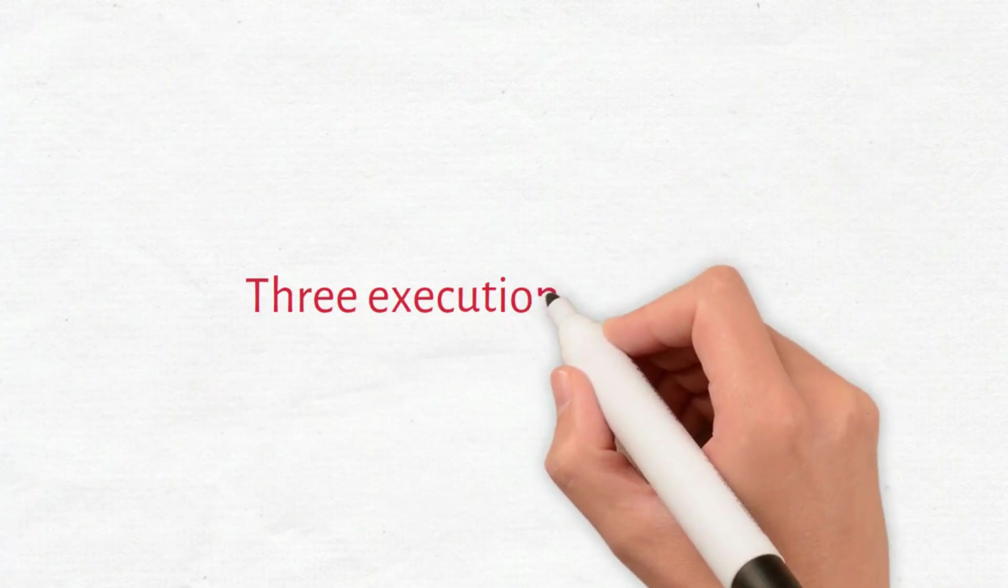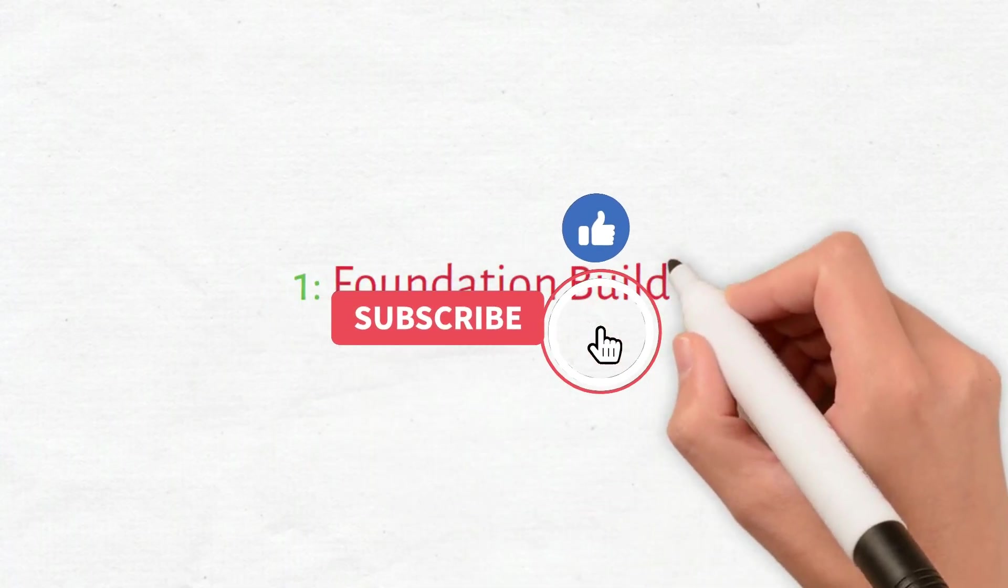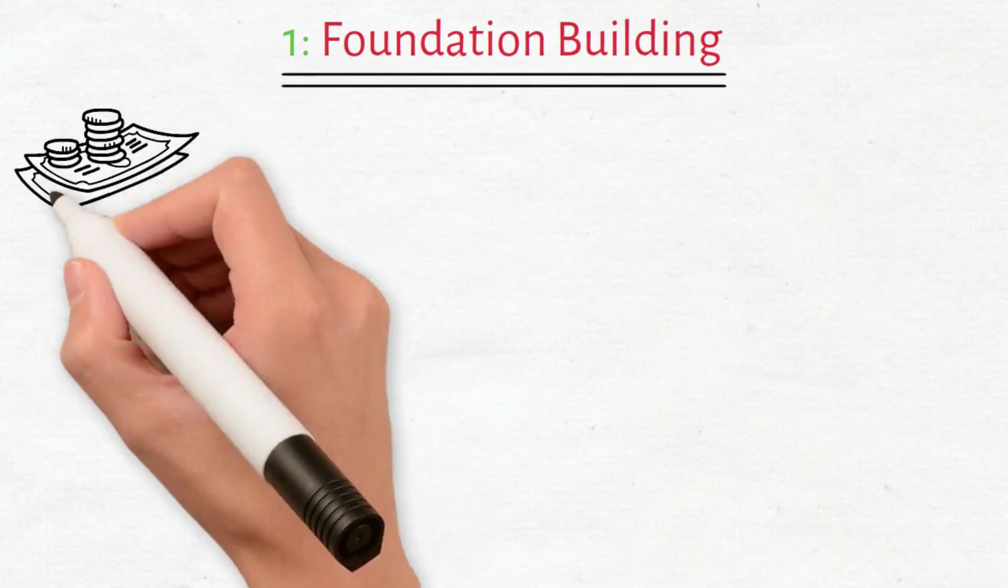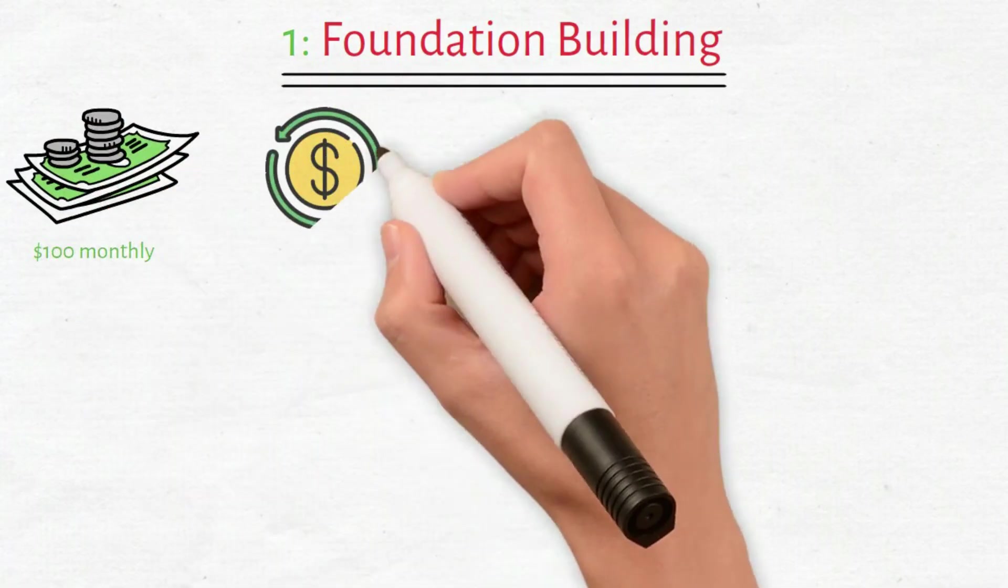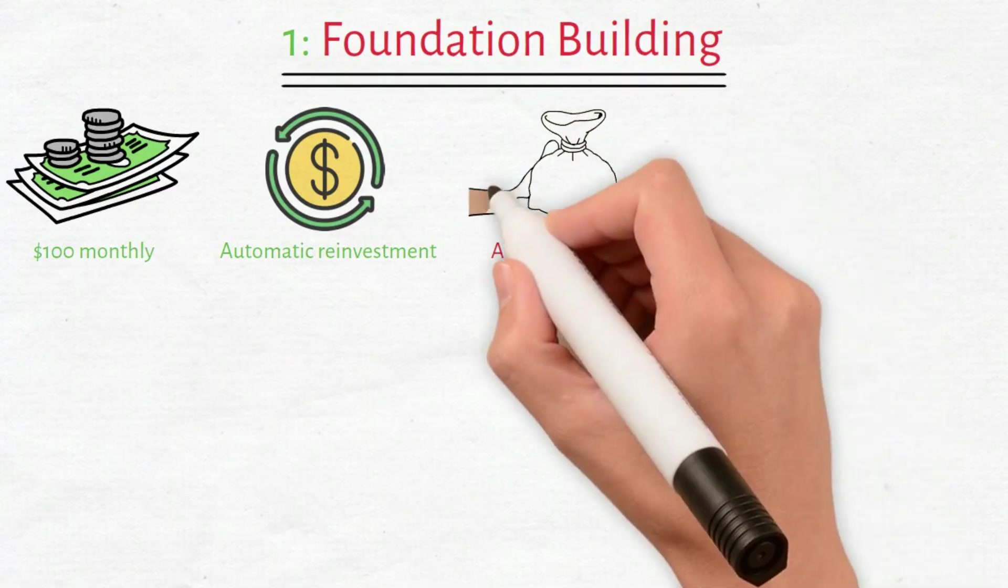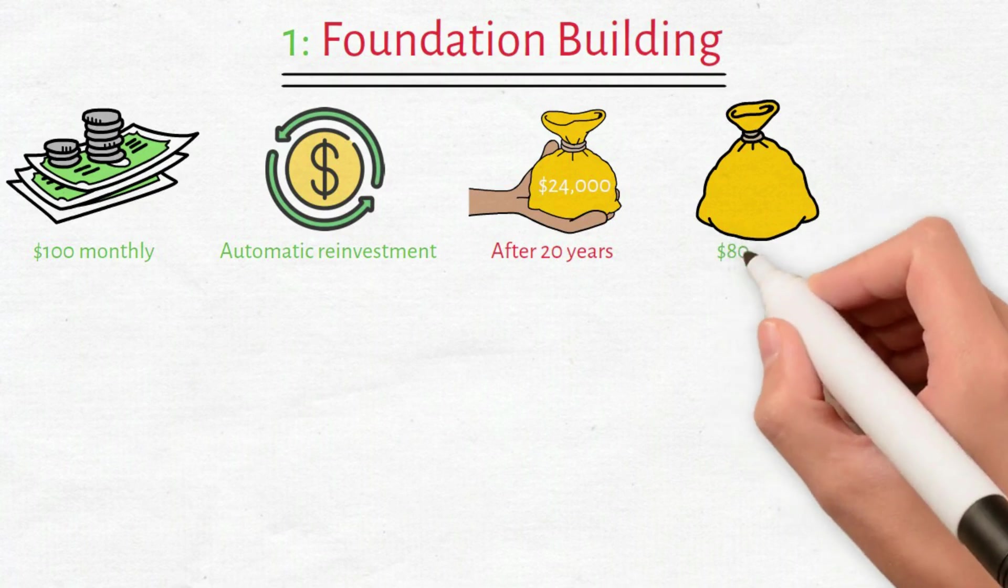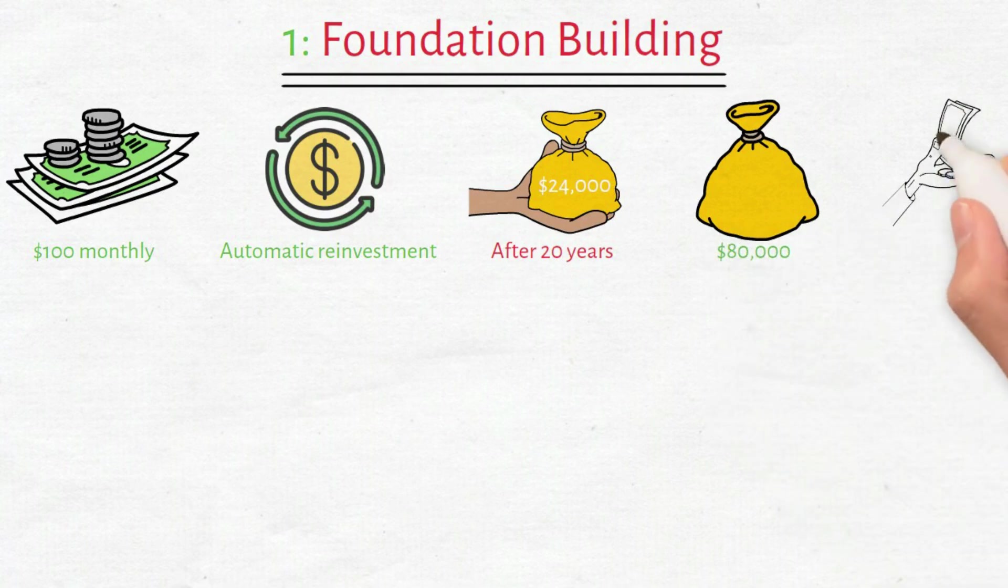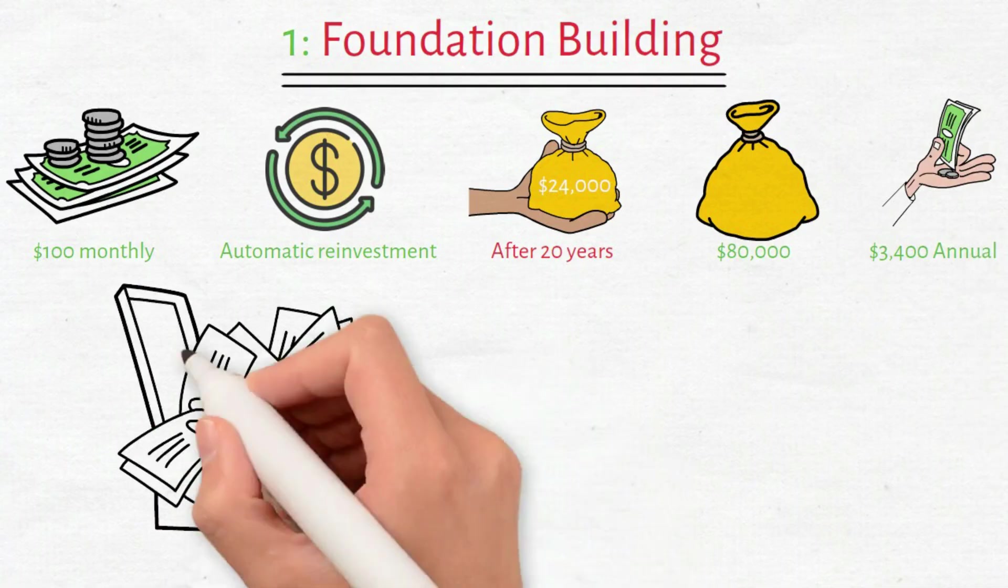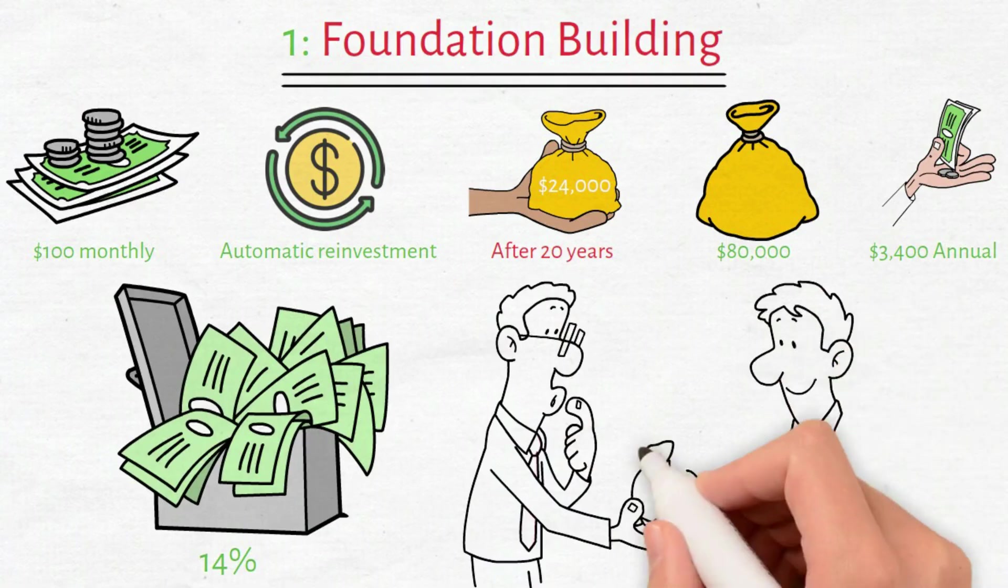Let me outline three execution strategies based on your current position. First strategy is foundation building. Commit $100 monthly to purchases. Activate automatic payout reinvestment. After 20 years, you've contributed $24,000. The portfolio value is approximately $80,000. Annual income? $3,400. Your yield on cost reaches 14%. You're collecting passive income exceeding your total contributions.